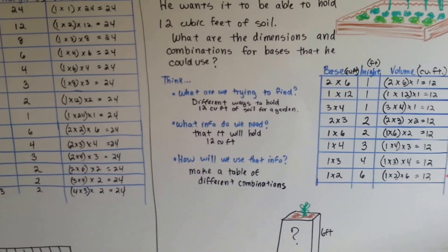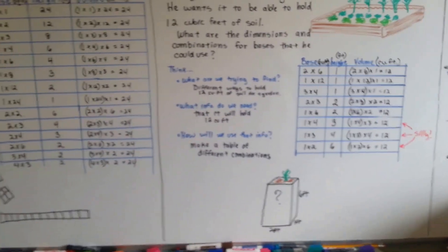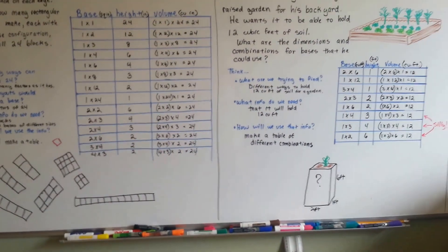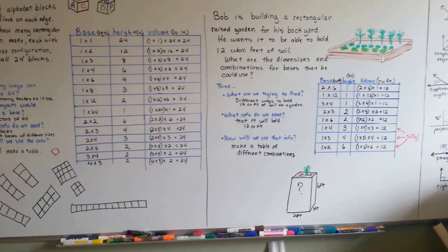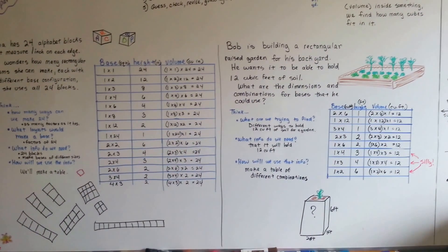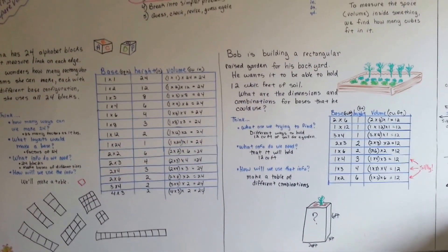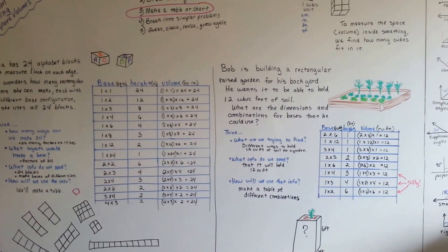So making a table can help you because it'll keep you from repeating answers because you'll say, oh, I've already got that one on the table. So that's problem solving and using a table when you've got a lot of information you're trying to sort through.